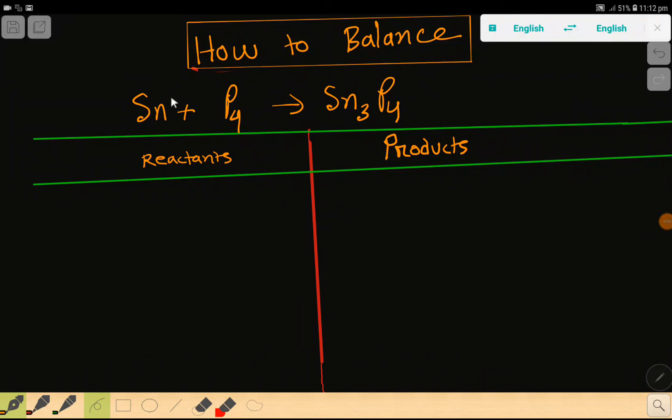Welcome to the channel. How to balance this reaction? This is tin, this is phosphorus, and our product is this. So to balance this reaction, we have to do a table like this. This is the reactant side, this is the product side.